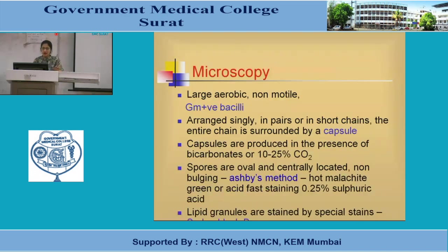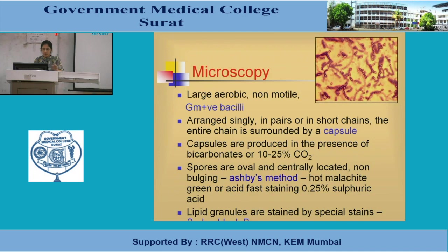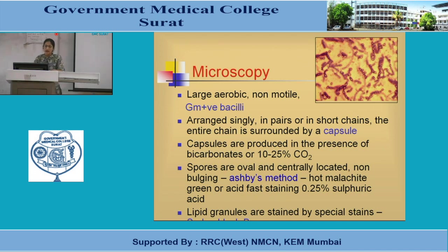On microscopy, large, aerobic, non-motile, gram-positive bacilli are found. The spore is centrally located and non-bulging — unlike Clostridia where the spore area becomes swollen, the bacillary size remains the same. The bacilli arrange singly, in pairs, or short chains, with the entire chain surrounded by a capsule visible in special staining techniques. The capsule is produced in the presence of bicarbonate or 10–25% CO2.